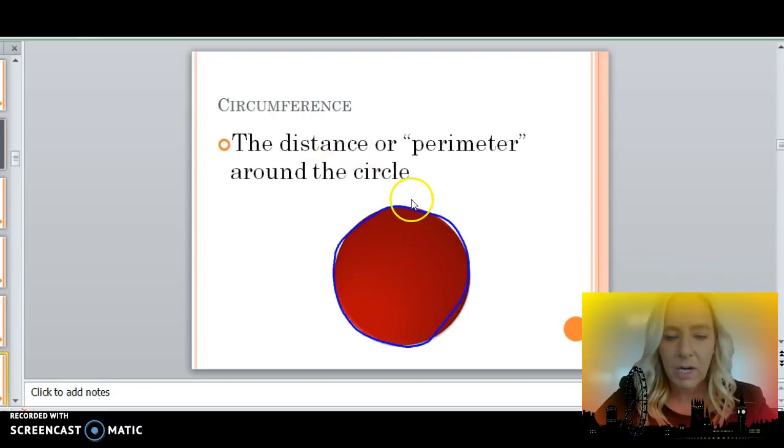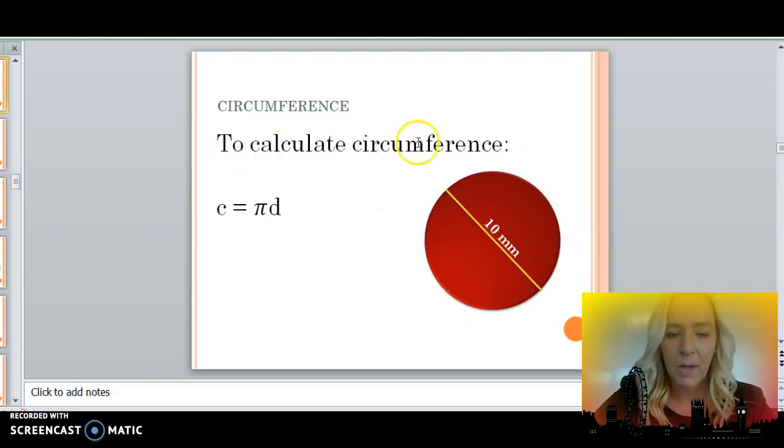Circumference is the perimeter, or distance around the circle. To calculate circumference, we're always going to use the formula C equals pi multiplied by the diameter. In this case here, we're going to take pi times 10, because 10 is our diameter.